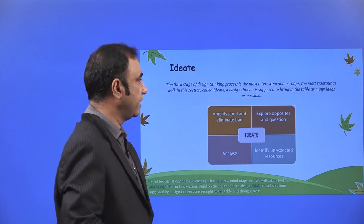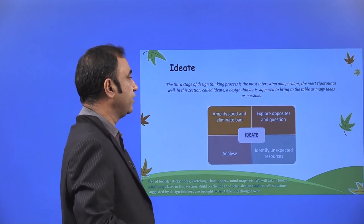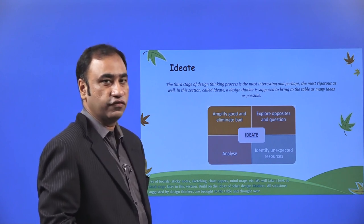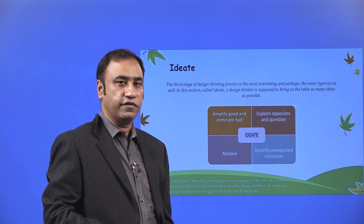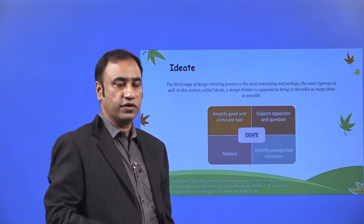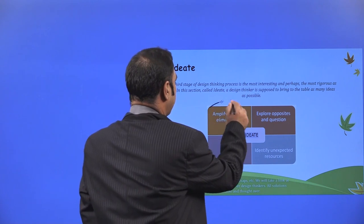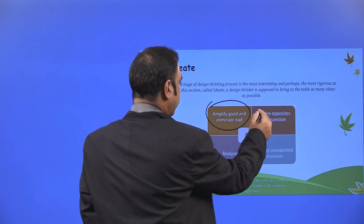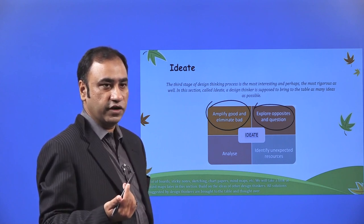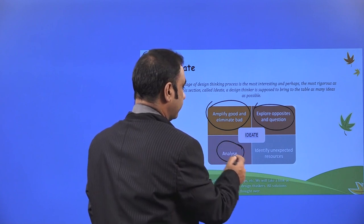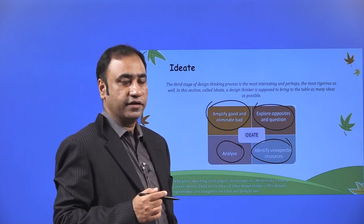Ideate. The third stage of design thinking process is most interesting and perhaps the most rigorous as well. In this section called ideate, a design thinker is supposed to bring to the table as many ideas as possible. This is the stage when you have to bring as many ideas as possible, evaluate those ideas based on different techniques, and then finally decide on one particular idea. Amplify the good, eliminate the bad. Explore opposites and questions.